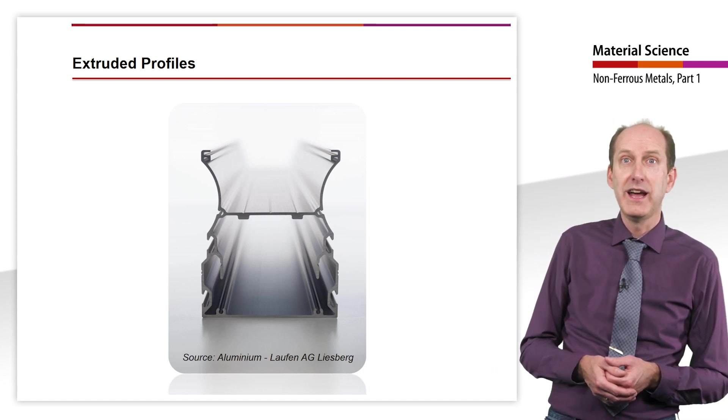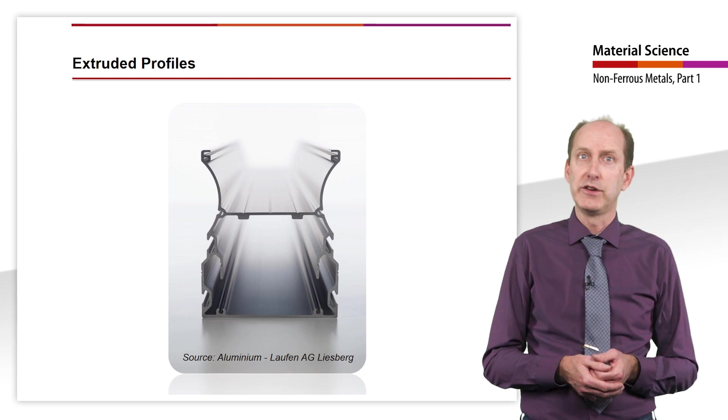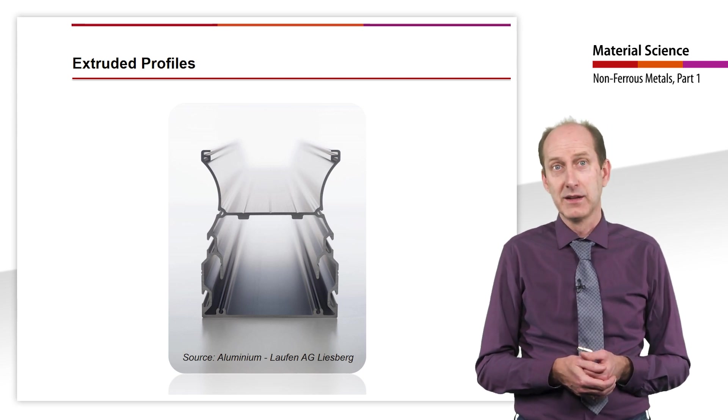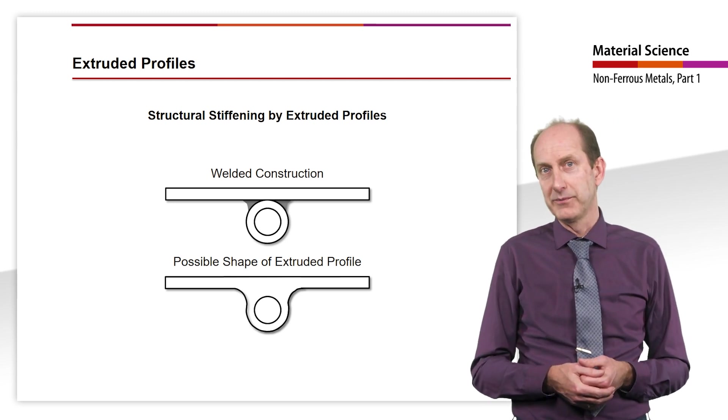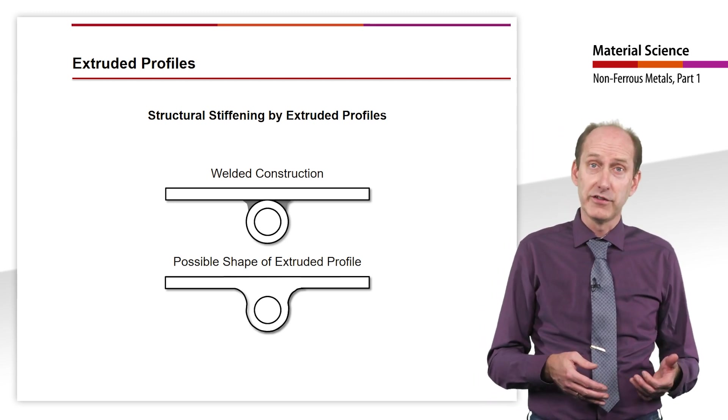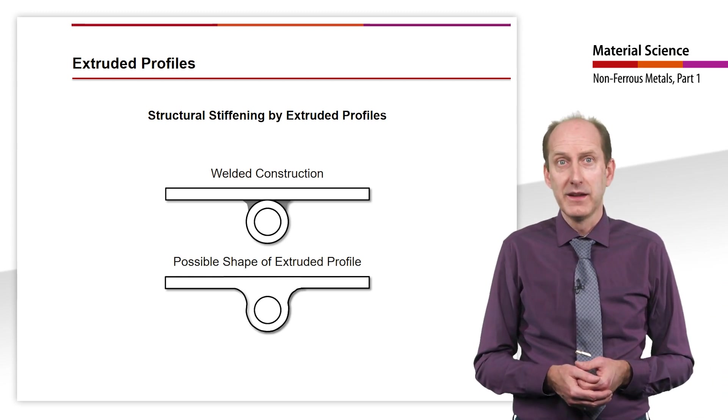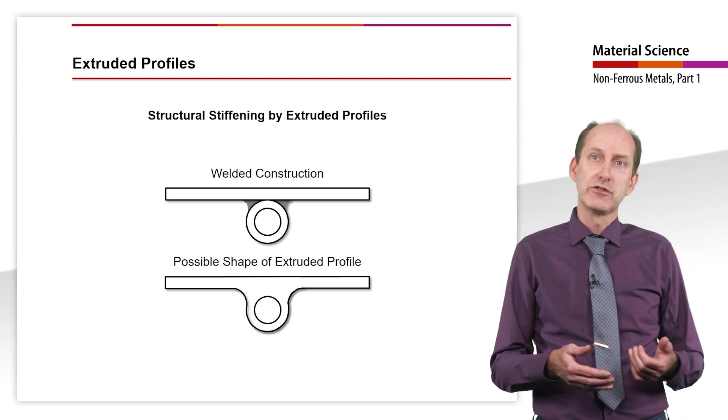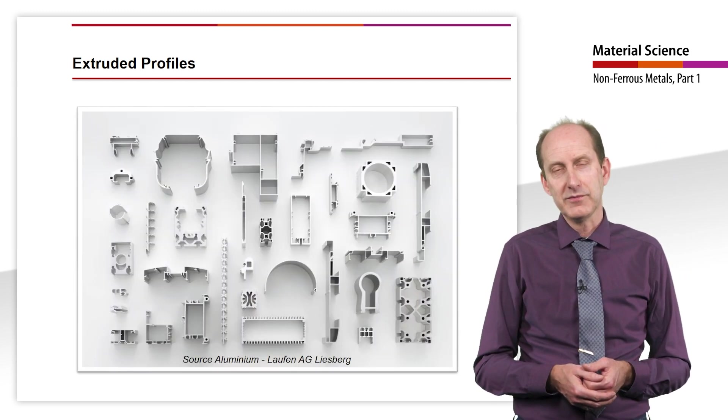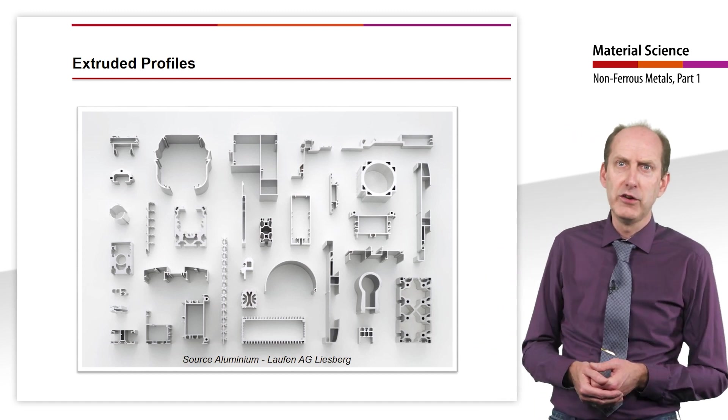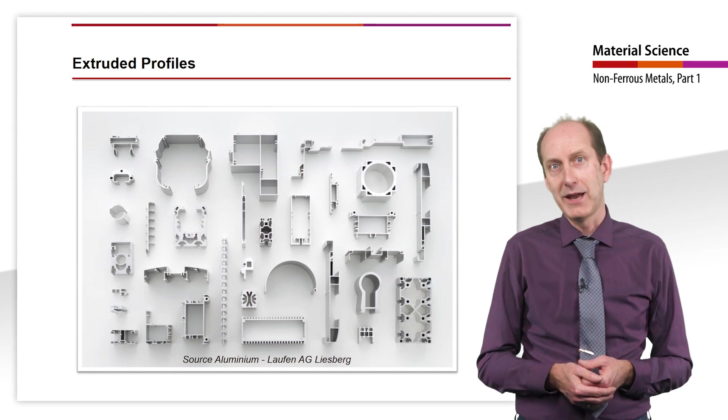Subsequently, only aging at approximately 170 to 185 degrees Celsius is required. This makes it easy to produce almost any complex profile geometries. This means that the stiffness of aluminum, which is three times lower than that of steel, can be compensated for by structural stiffeners and weight savings can be achieved. In this photo you can see real extrusions and see how complex some of the geometry can be.